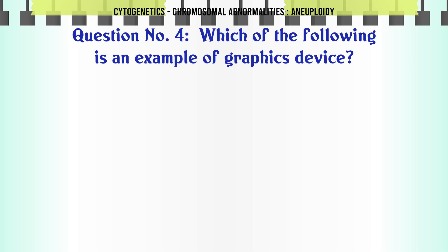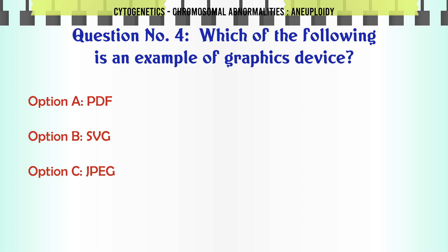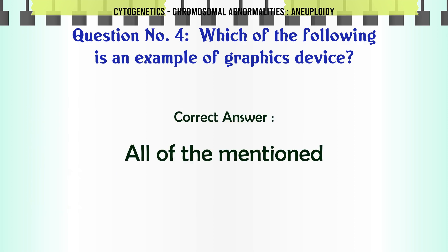Which of the following is an example of a graphics device? a. PDF, b. SVG, c. JPEG, d. All of the mentioned. The correct answer is all of the mentioned.